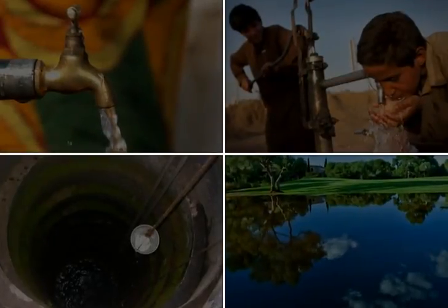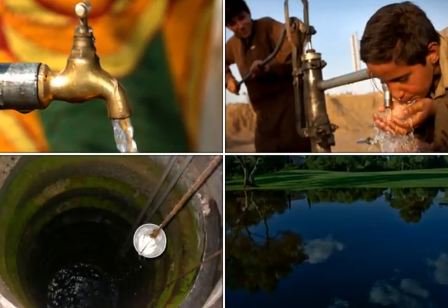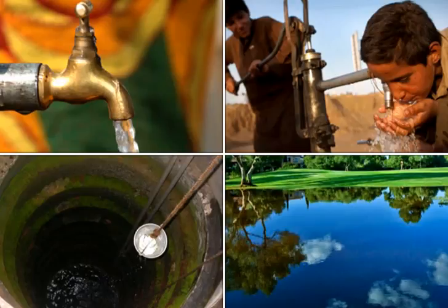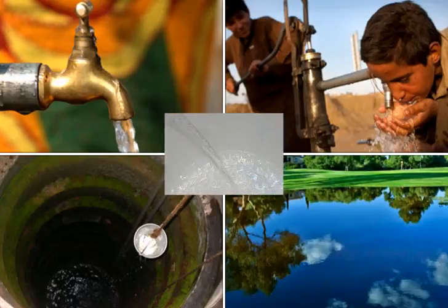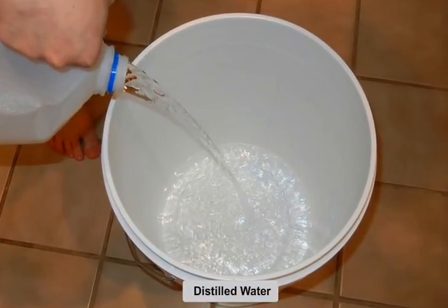The water that we get from sources such as taps, hand pumps, wells and ponds contains several salts dissolved in it. This water is thus a good conductor of electricity. On the other hand distilled water is free of salts and is a poor conductor.